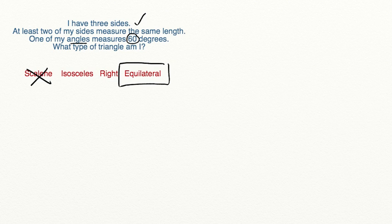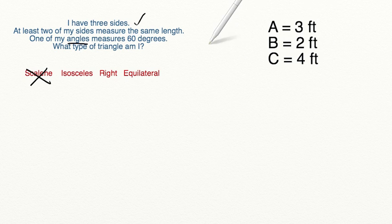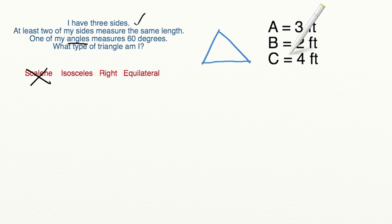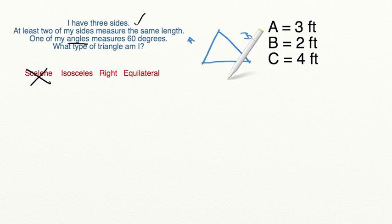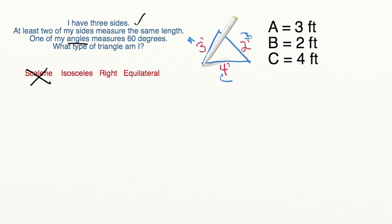Let's try another problem together. We have three sides listed with their side lengths. What type of triangle will this create? I'm going to sketch out a triangle — remember, this is not drawn to scale, this is just to help me label my sides. Side A has a measurement of three feet, side B has a measurement of two feet, and side C has a measurement of four feet. Each side length has a different measurement, which means this has to be a scalene triangle.